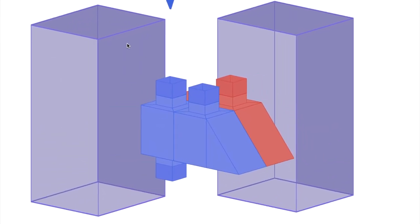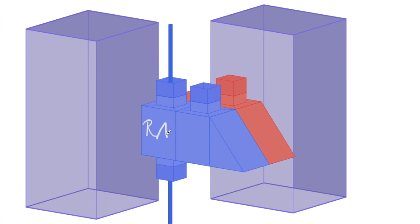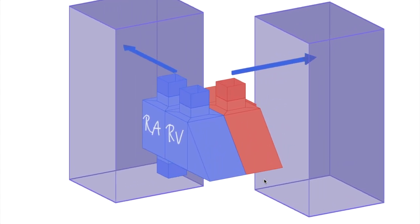The blood arrives at the right atrium. When the heart is relaxed, blood flows passively into its adjacent ventricle, the right ventricle. The ventricle contracts with great force to push blood out toward the lungs.